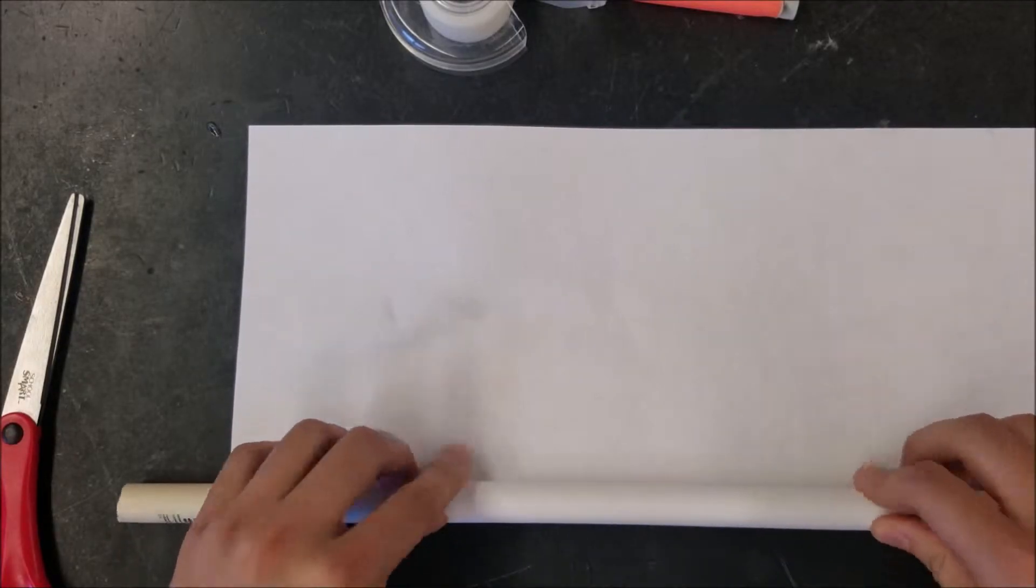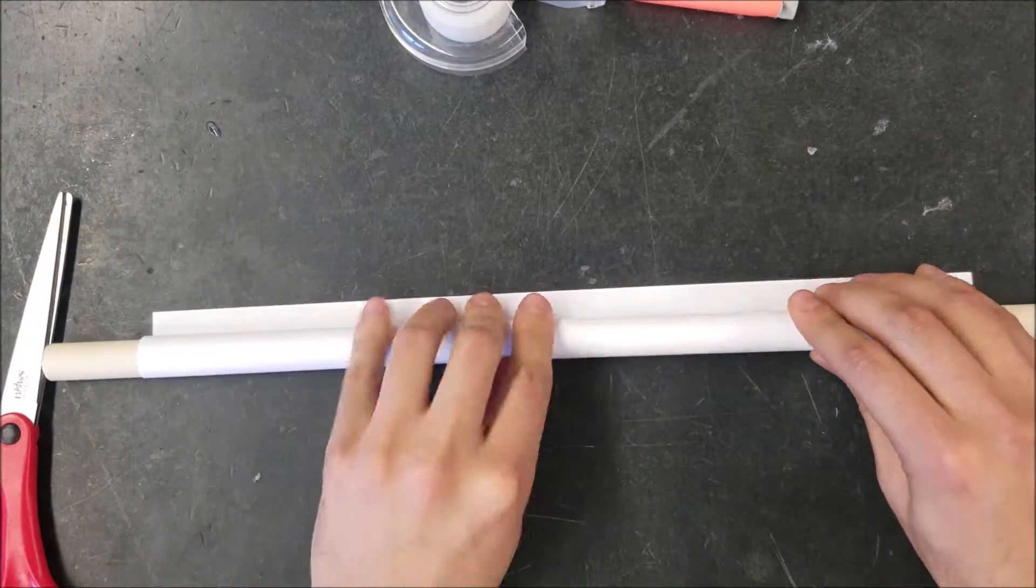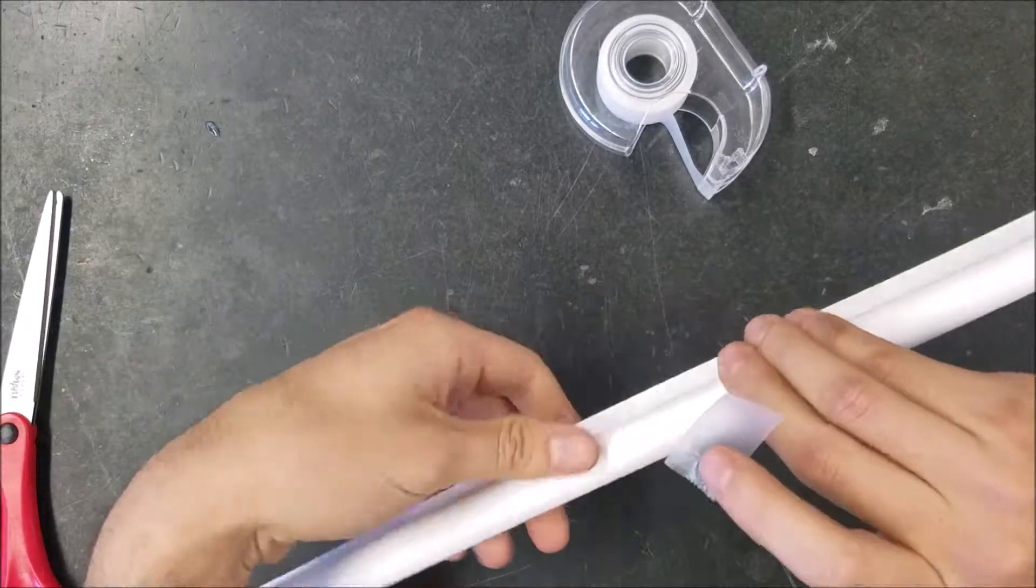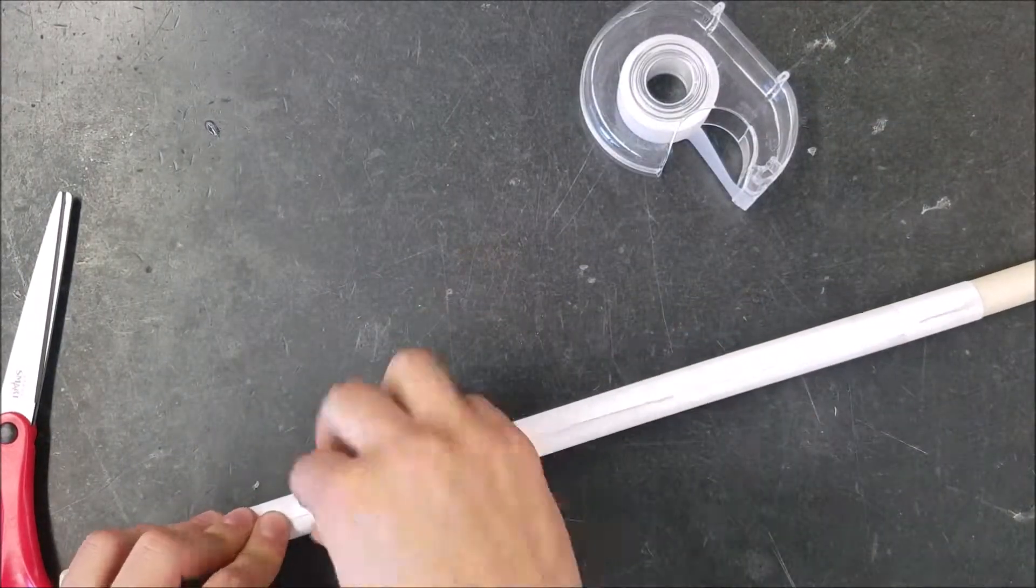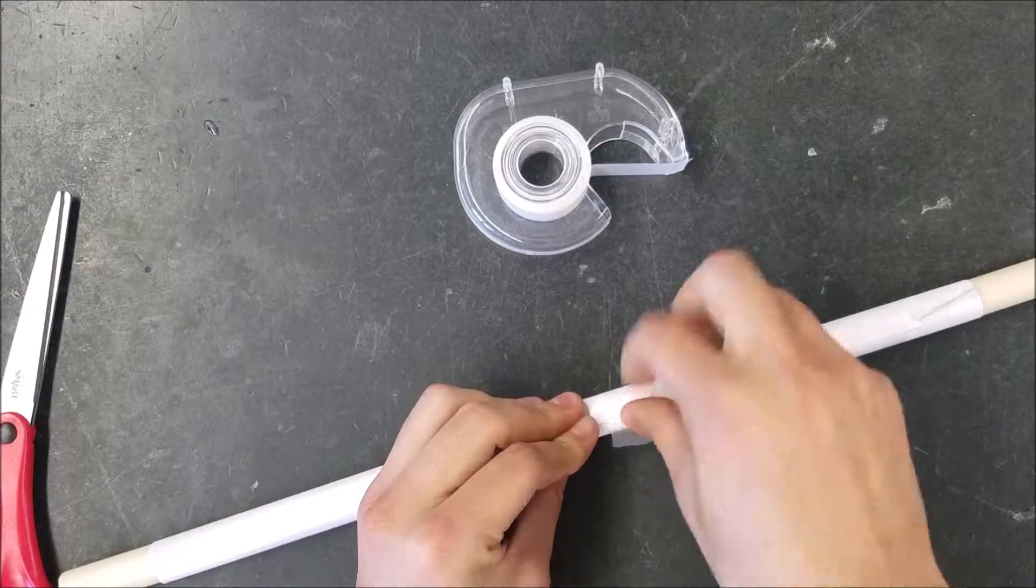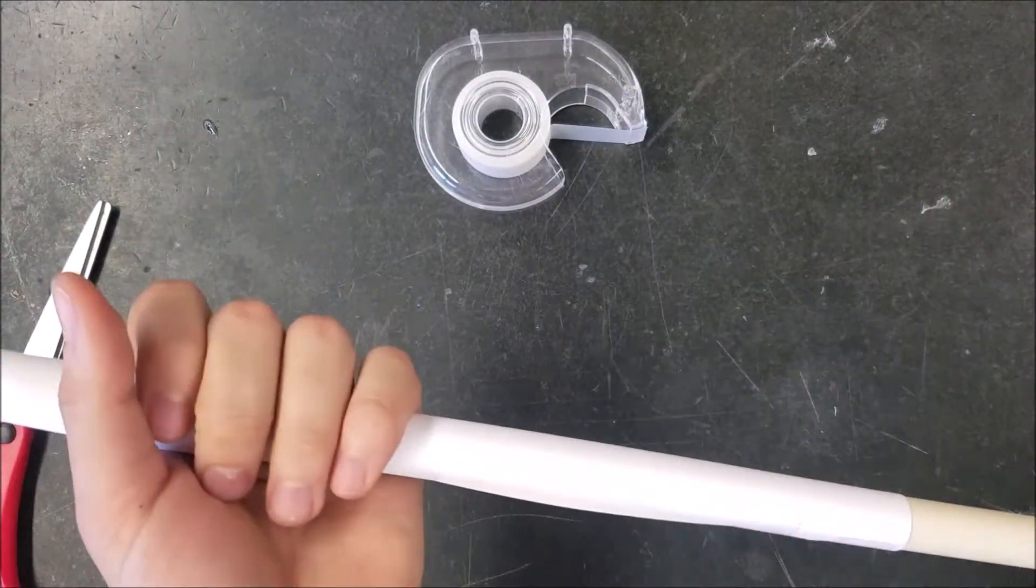What you're going to do is wrap the paper around the PVC pipe or dowel and try to make it as tight as you can, and it will help the darts fly out of the blow gun. Then you're going to seal it shut with the tape and then you are ready to use your blow gun.